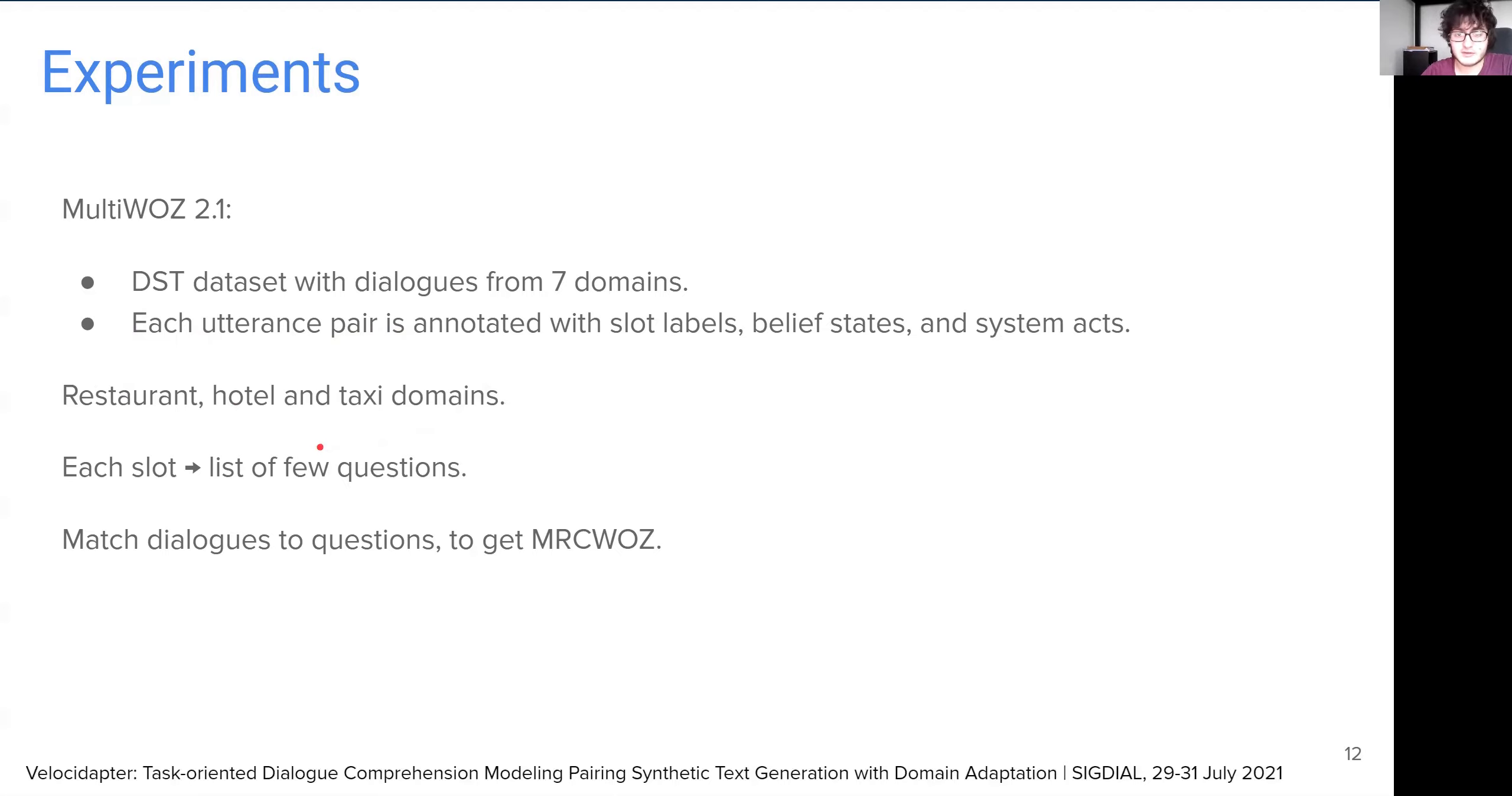Since MultiWOZ does not come with dialogue comprehension questions natively, we supply our own hand annotated questions. Specifically, for each slot type in MultiWOZ, we manually create a list of few questions. We then match each dialogue to a set of questions, according to the slots present in the dialogue, to create our MultiWOZ dialogue comprehension dataset, which we term as MRC-WOZ. Importantly, this creation has nothing to do with our framework, VelocAdapter, which is a totally different process for augmenting data.